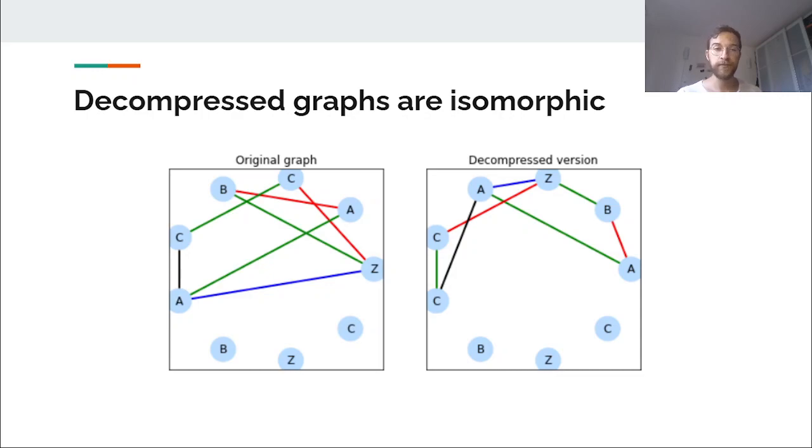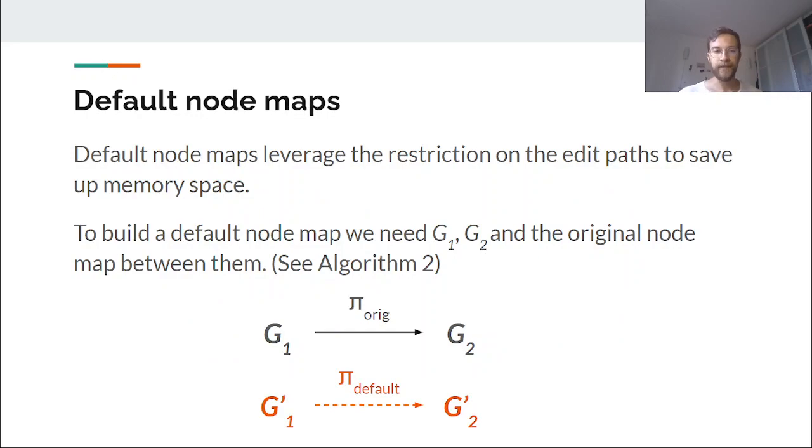Or, for example, you want to insert an edge and you have the source and the target nodes of the edge. But as the nodes were permuted, you end up adding the edge where you're not supposed to do it.